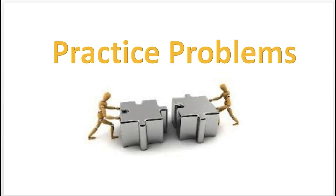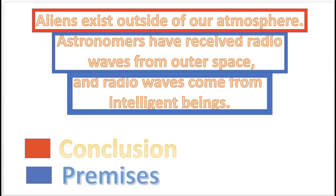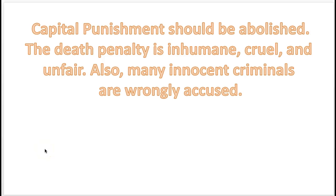Let's work a few practice problems. Here's the first: 'Aliens exist outside of our atmosphere. Astronomers have received radio waves from outer space. And radio waves come from intelligent beings.' Identify the premises and the conclusion. The conclusion is in the red and the premises are in the blue.